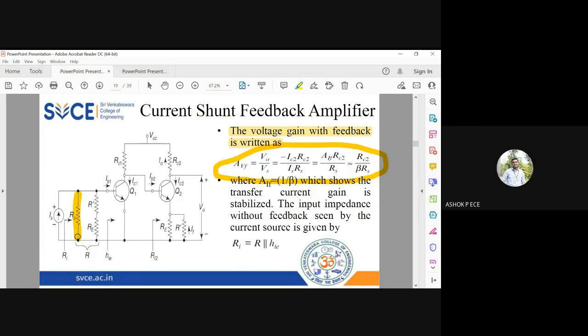Hie is available across the input, and this parallel combination is given by r. So I can write r i equal to r parallel to hie. All the resistances are in parallel, so r i equal to r parallel to hie.